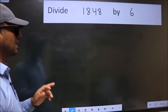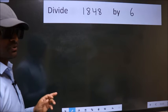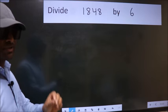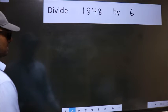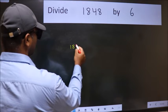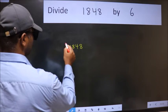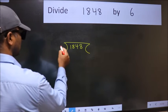Divide 1848 by 6. To do this division, we should frame it in this way. 1848 here, 6 here.